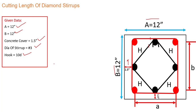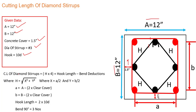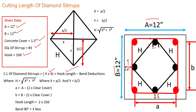The hook length we are taking as 10d. Now let's check the formula to find out the cut length of this diamond stirrup. The formula is: h × 4 + hook length - bend deduction. Here h represents one side of the diamond stirrup. When we divide the diamond into four sides, all sides are equal, so we multiply h by 4. We have two hooks and we need to subtract band deductions.